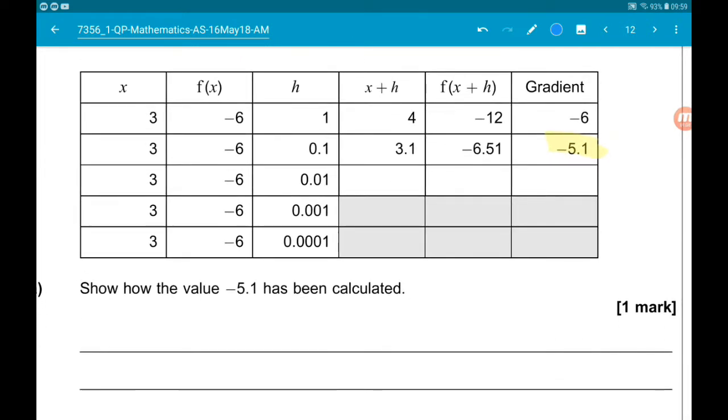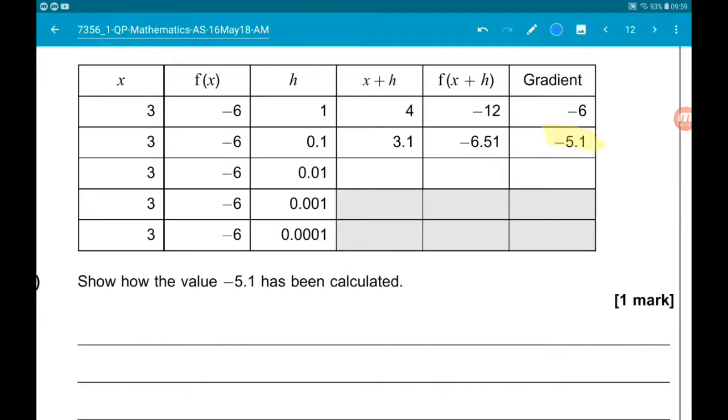The Y-coordinate of the original point is -6, it's F of 3. So we've got -6 minus the other Y-coordinate. Now the other Y-coordinate is F(x+h), which is -6.51. So we've got -6 minus -6.51.